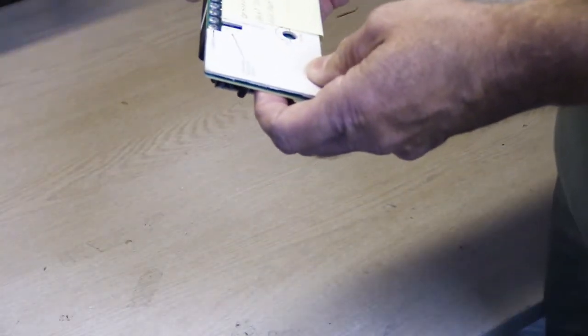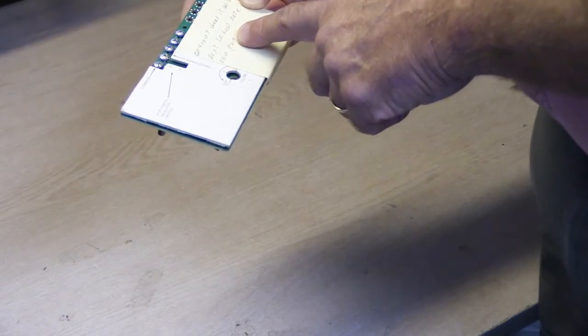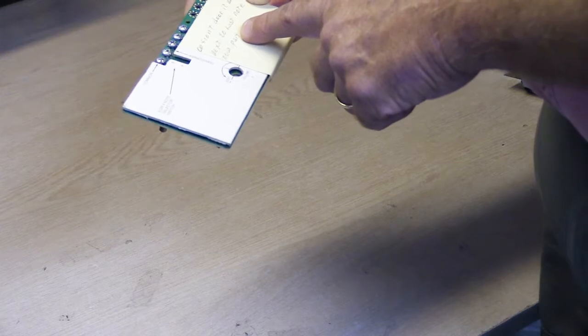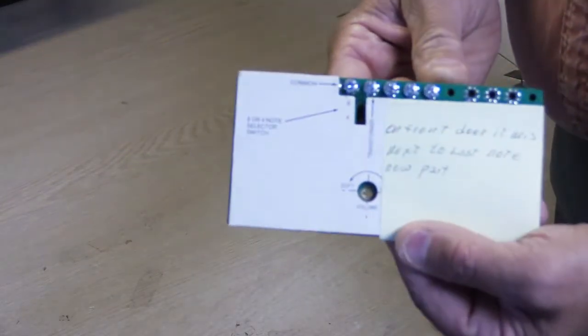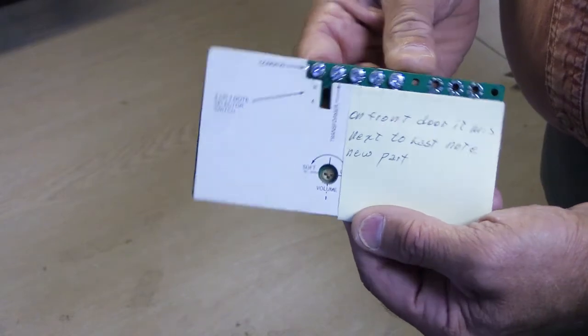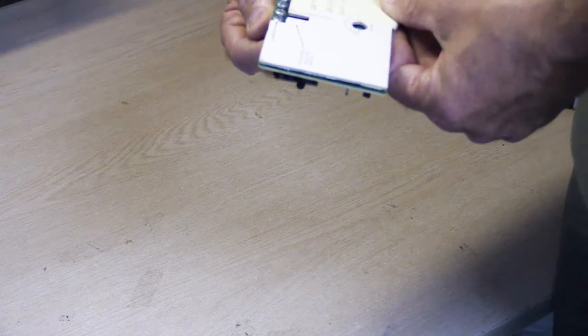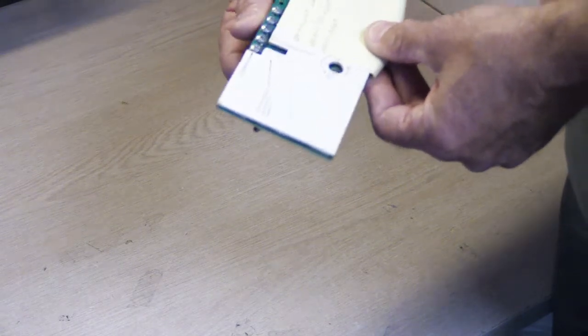So what we have here is, oh there's a note. It says somebody wrote there's a post-it note on it, it says on front door it miss, on front door it missed next to last note new part. I don't know what that means exactly. So if you're the technician or the serviceman who wrote this on here let me know what you meant. I think what it means is when you ring the front door it misses the fourth note. That would be my guess.